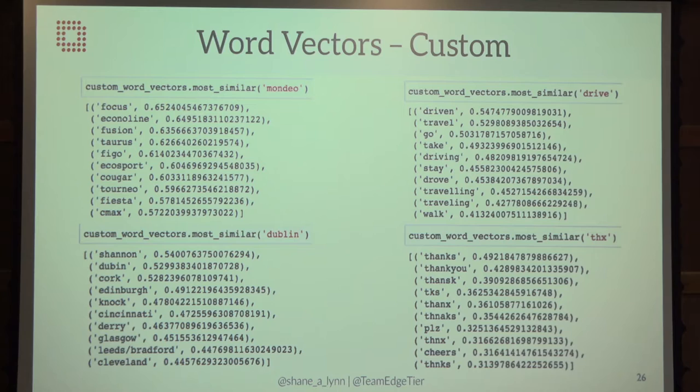If you go down the road of using this in production, you'll nearly always get better accuracy by training your word vectors on corpus from your own data. We're working with a travel company and trained vectors on travel bookings — the most similar words to 'Mondeo' turn out to be other Ford car models. The power of this is it also captures misspellings, because misspelled words fit in sentences the same way as correctly spelled words, and it captures abbreviations like THX for thanks.